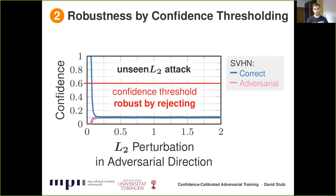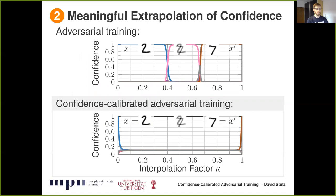This also generalizes to other threat models — shown here for an L2 attack — and I will also show results for L0 and L1 attacks as well as adversarial frames. We also think biasing the model towards low-confidence predictions in unknown areas of input space is desirable in general. For example, along an interpolation between two test examples — a 2 on the left and a 7 on the right — adversarial training always yields high-confidence predictions, even for this combination shown by the pink line. Our confidence calibrated adversarial training, in contrast, reverts to uniform distribution as trained, which is significantly more meaningful for examples that clearly do not belong to the data distribution.